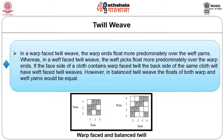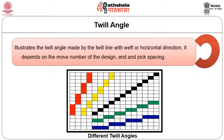In the figure, you can see a two up one down twill where there are two warp ends lifted to one pick — this is a warp-faced twill. The next figure shows a two up two down twill, which is an equal-facing twill repeating on four ends and four picks. Figure 9 illustrates the twill angle made by the twill line with the horizontal direction. The twill angle depends on the move number and the ends and pick spacing, and can vary from 15 to 75 degrees.